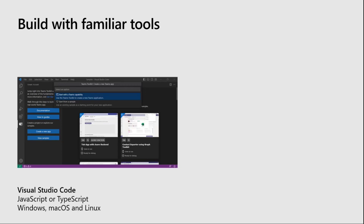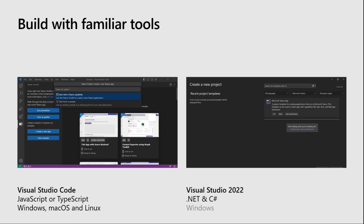If you're a JavaScript or TypeScript developer on Windows, macOS, or Linux, Teams Toolkit for Visual Studio Code is the tool for you. It's going to help you create, build, and deploy your apps much easier and faster than doing it on your own. There's also Teams Toolkit for Visual Studio 2022 — if you're a .NET and C# developer on Windows using Visual Studio, take a look at that. Although for this series, we're concentrating on the Visual Studio Code extension.